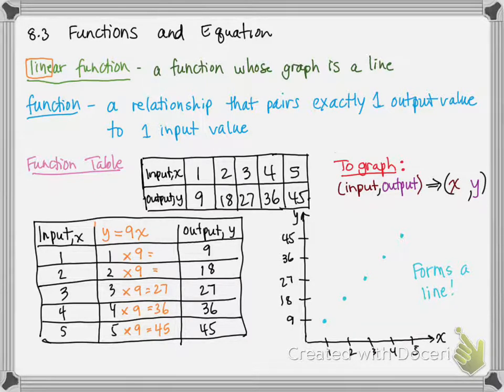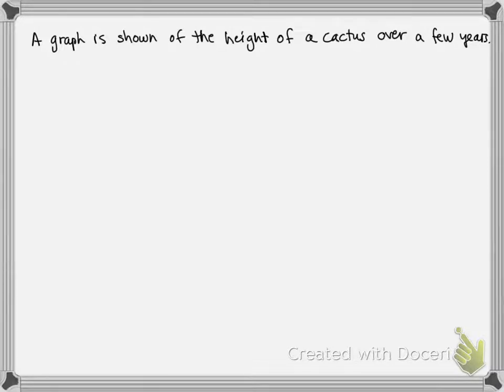So, I want to do one more example with you and this is kind of a backwards problem. So what you're going to be given is a graph. So I'm going to go ahead, so basically we have a graph is shown of the height of a cactus over a few years.